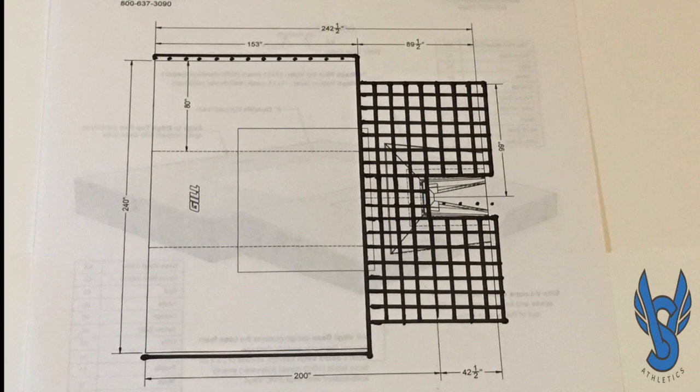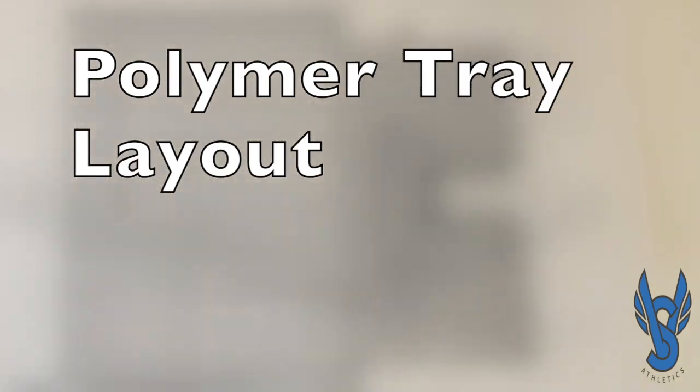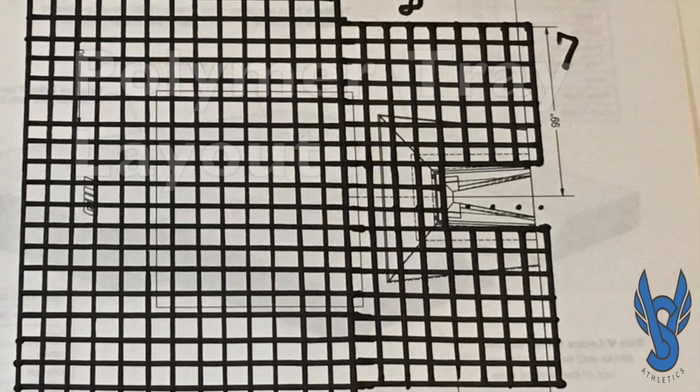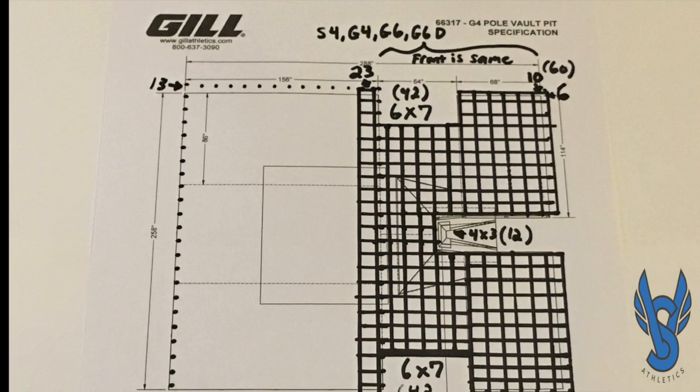The following images will detail our recommendations for the number of units that need to be purchased for each of the landing systems. The schematics shown also give you an idea of the layout, including the number of units in each area depending on which landing system you've purchased.